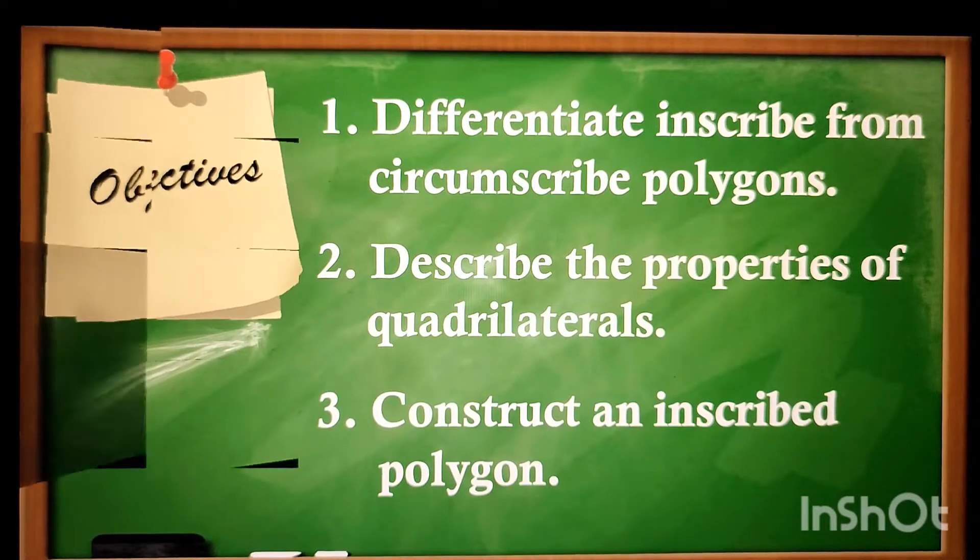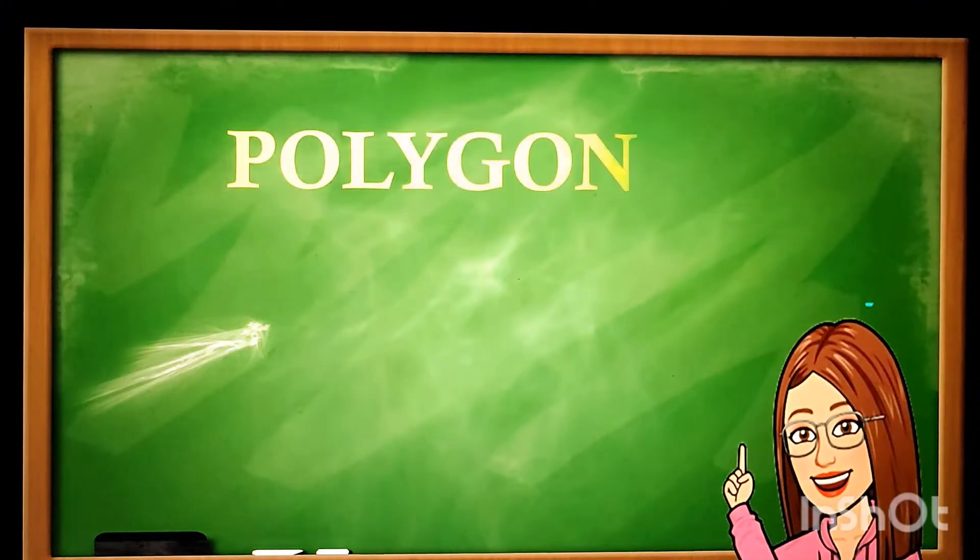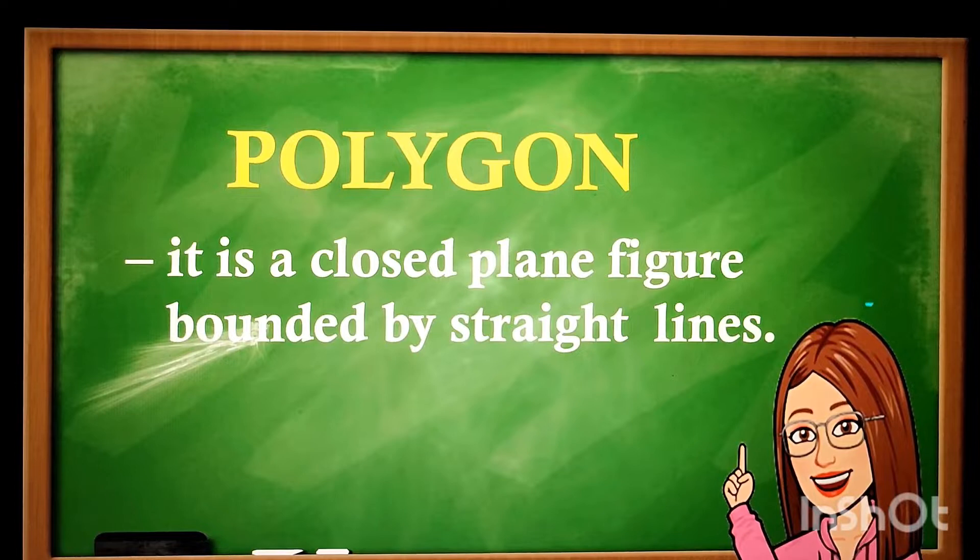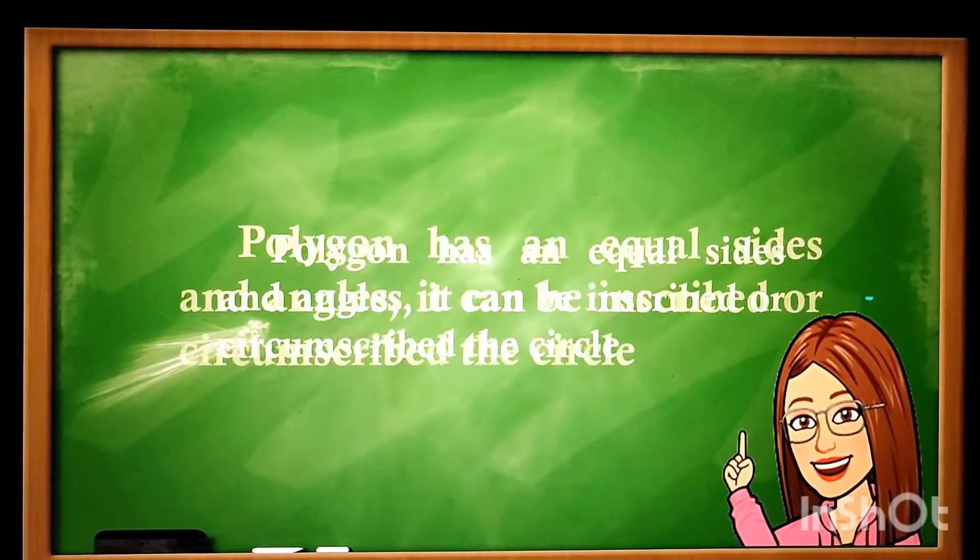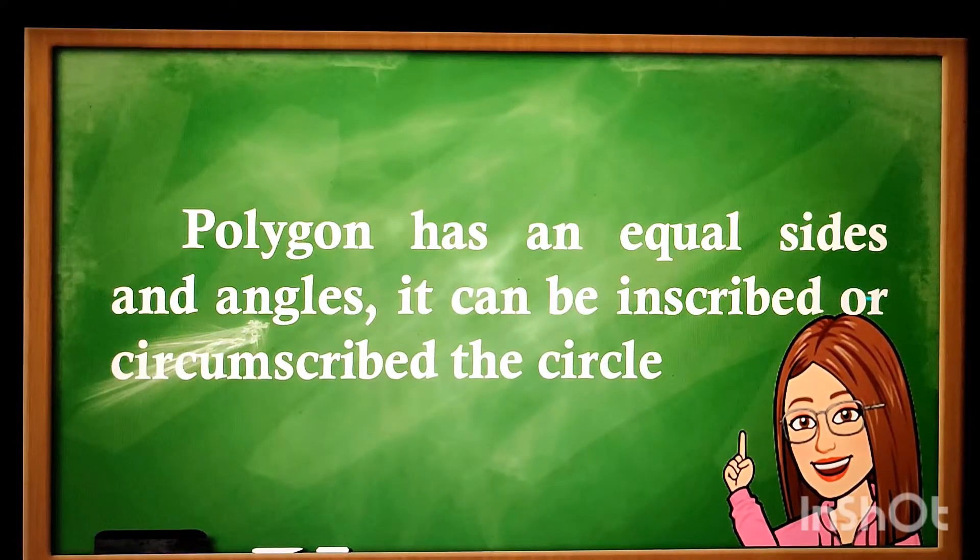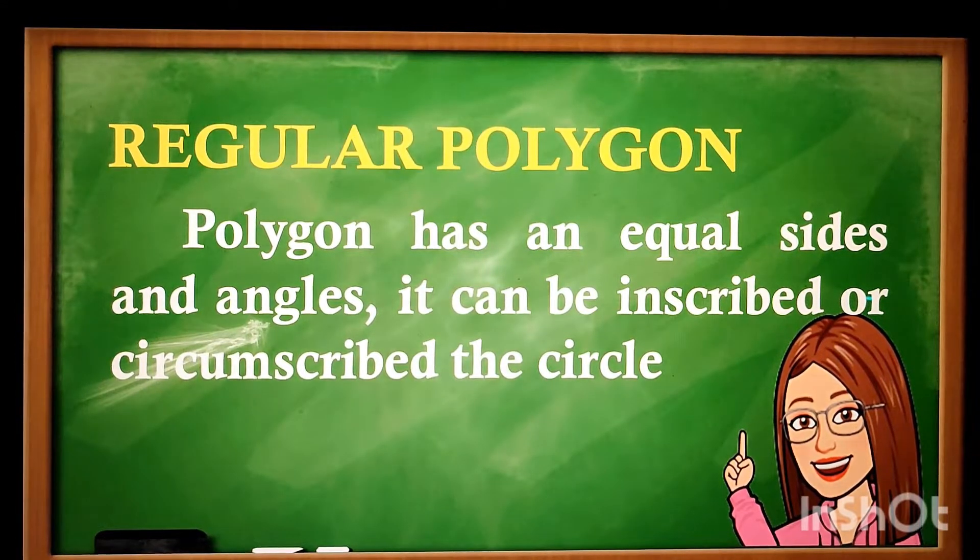Let us define first what is polygon. A polygon is a closed plane figure bounded by straight sides. When a polygon has equal sides and angles, it can be inscribed or circumscribed in a circle. That is called a regular polygon.